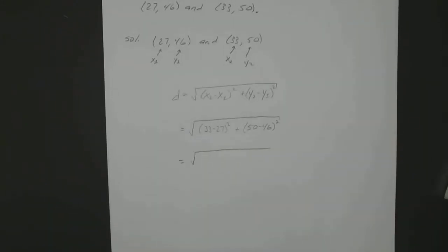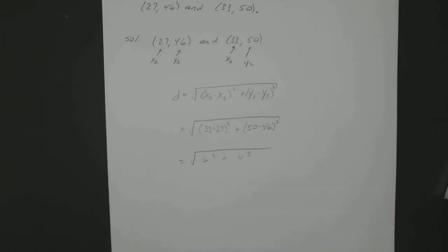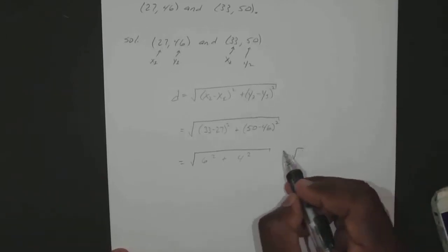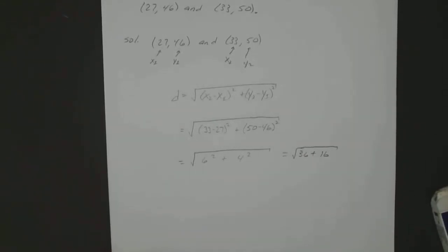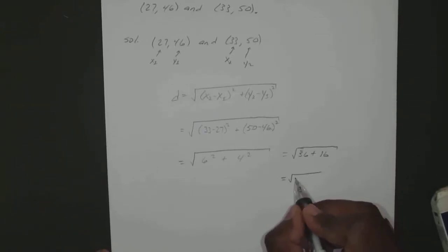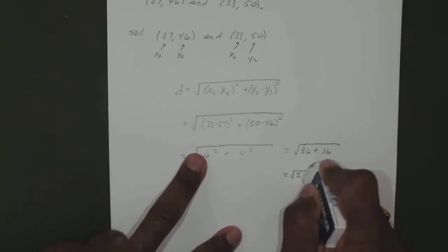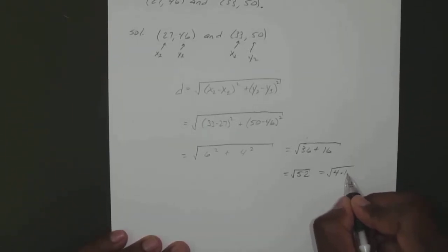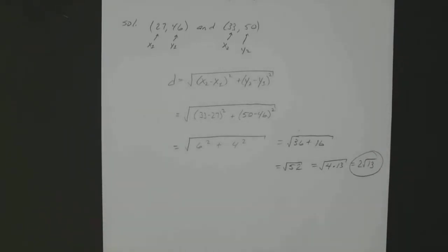So that's going to equal the square root of 36 plus 16, which is the square root of 52. And 52 is equal to the square root of 4 times 13, which is 2 square root of 13. Okay, so it won't always end up a nice neat little number — sometimes it'll end up kind of crazy.